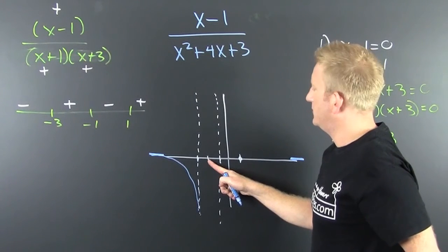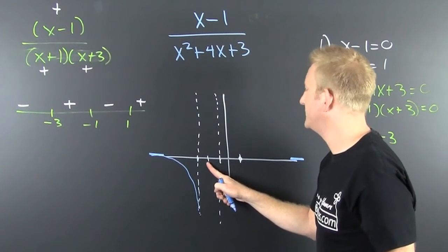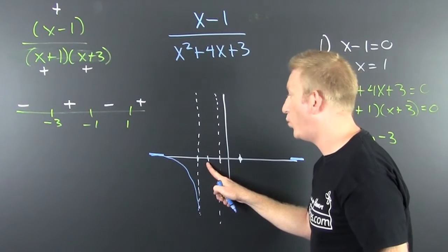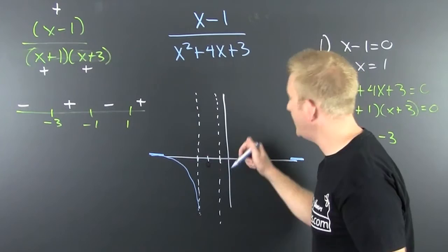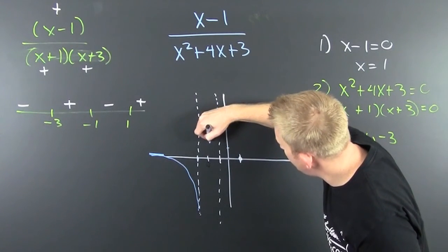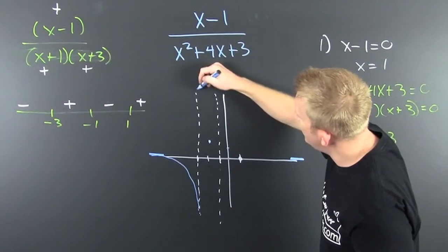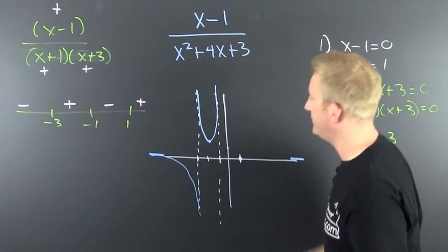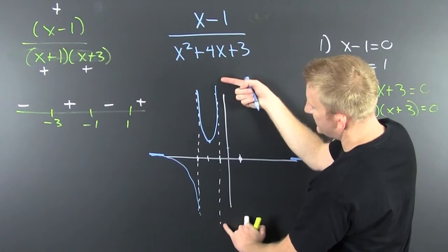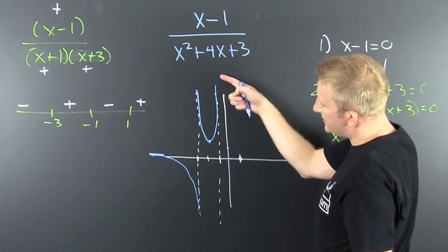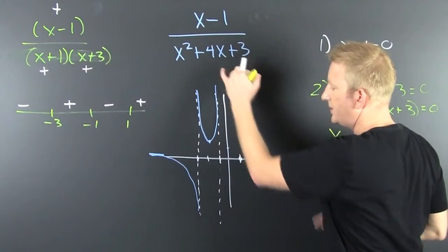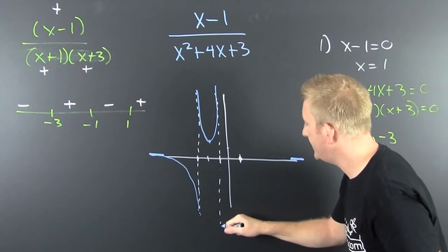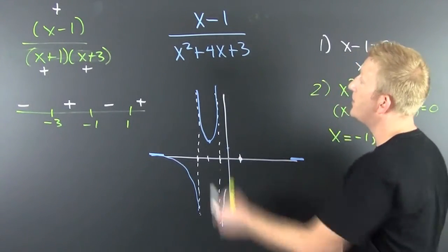To determine where we go from the asymptote at x = -1: the sign to the right of -1 is negative, so we start at minus infinity there. The graph then rises to the zero at x = 1. I can find the y-intercept by putting 0 in: that gives -1 divided by (1)(3), which is -1/3.